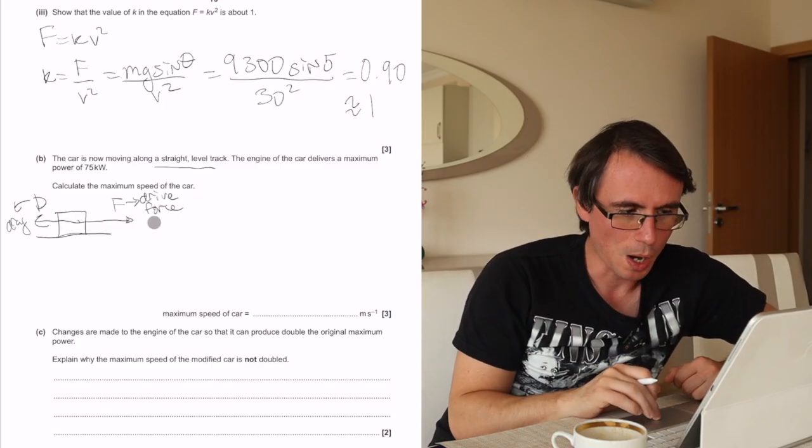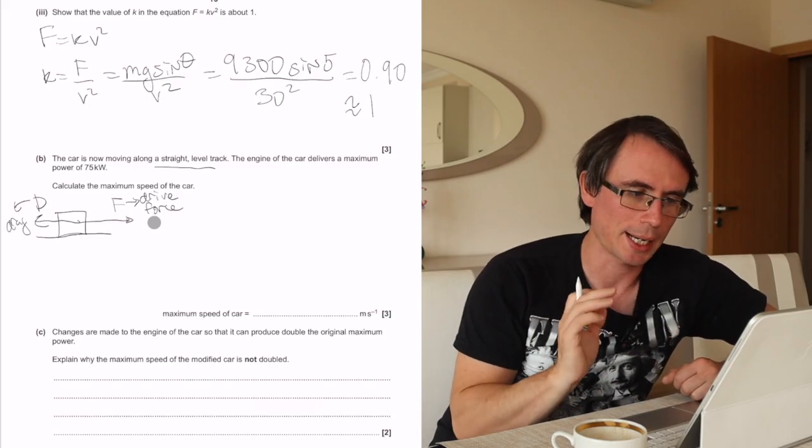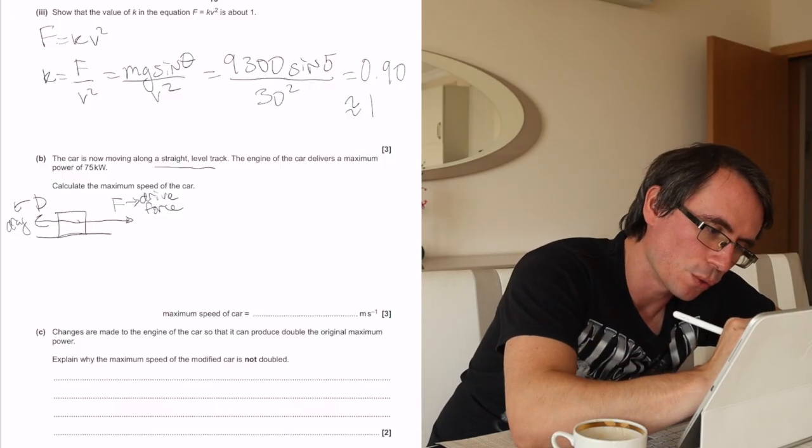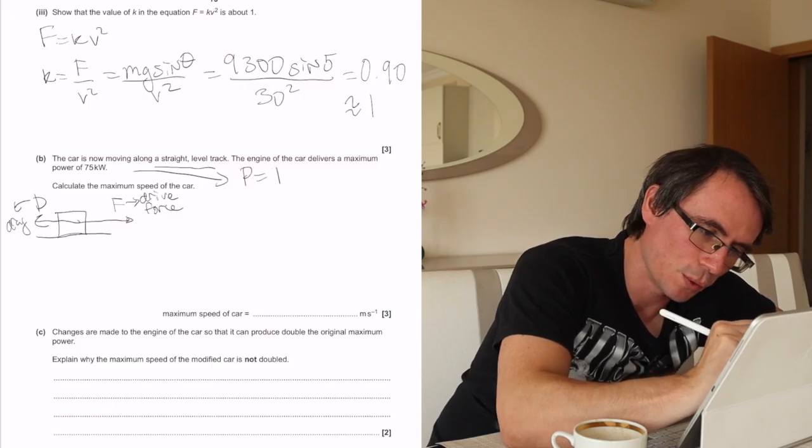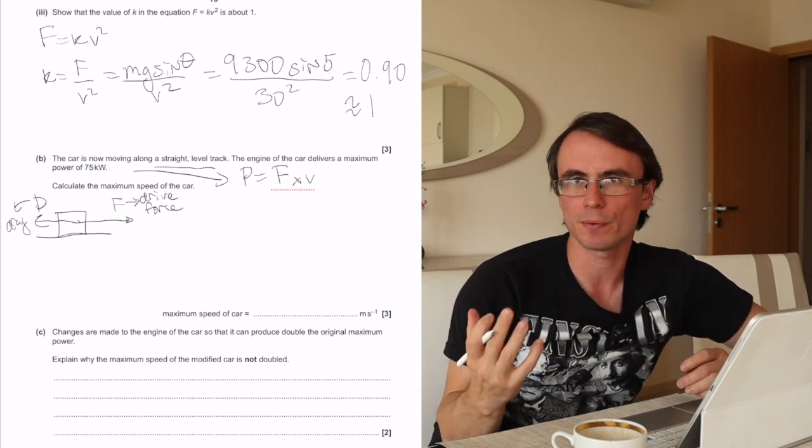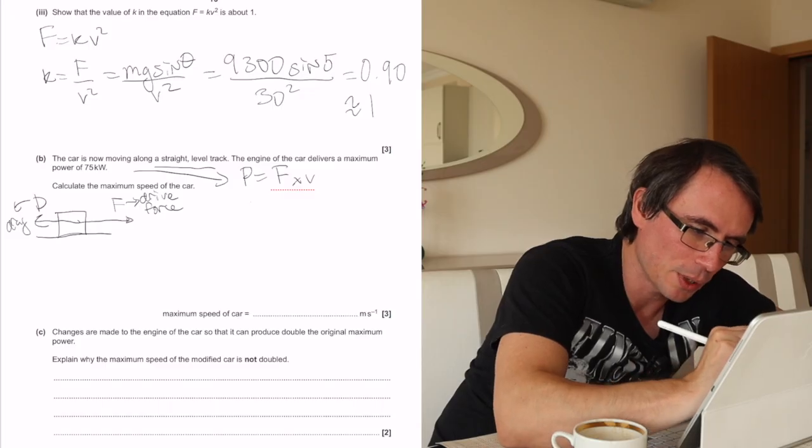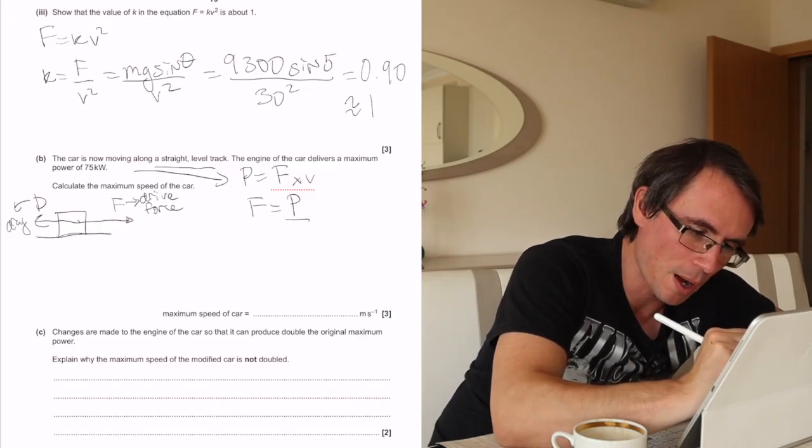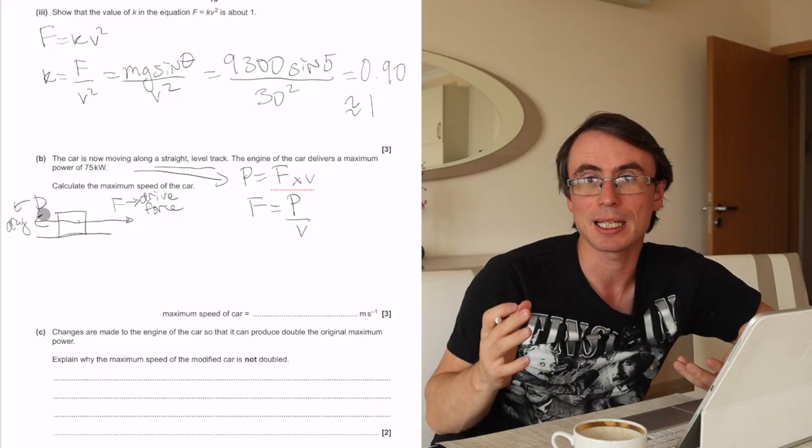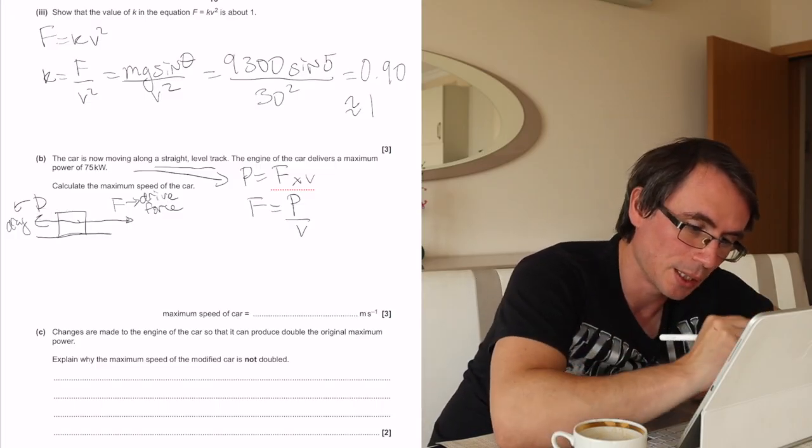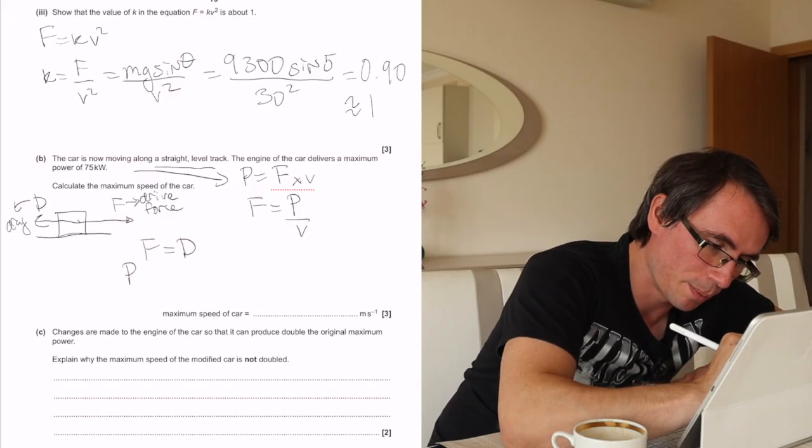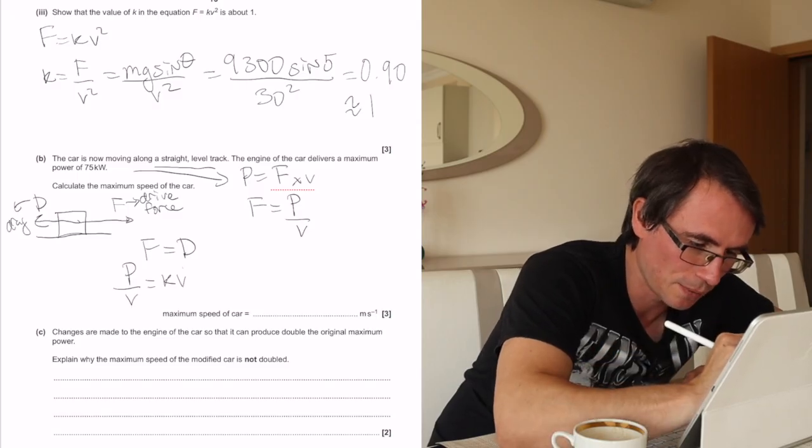When the maximum speed occurs, the drive force will be exactly equal to the drag. Every time you see power in a mechanics question, I just urge you to write down the equation that power equals force multiplied by velocity. This really helps and provides you an equation for the drive force. If we were to rearrange this for the force, we get that force equals power divided by velocity. At maximum speed, F is going to be exactly equal to the drag force. So F equals the drag force. F was P over V, and the drag force was kV squared.